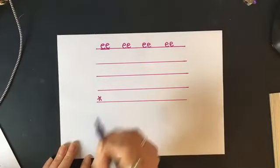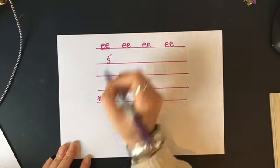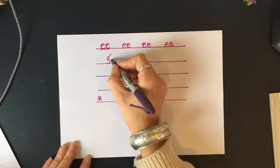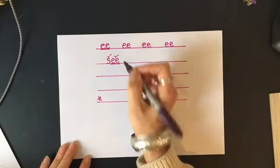Okay. Shall we mark it? If you got S, give it a tick. And if you got the E sound, E, E together, special friends, give it a tick. Well done.